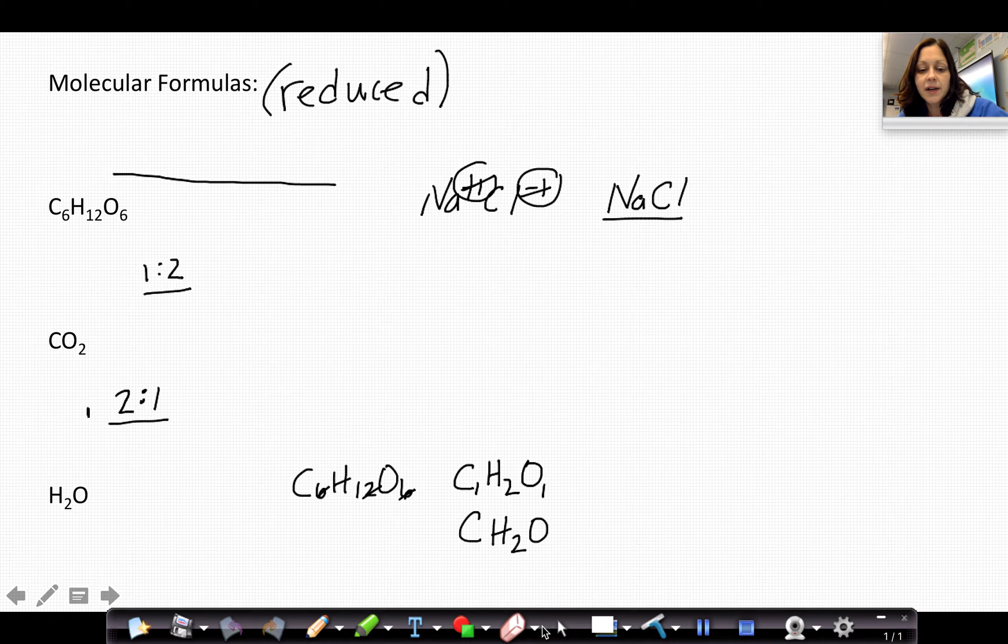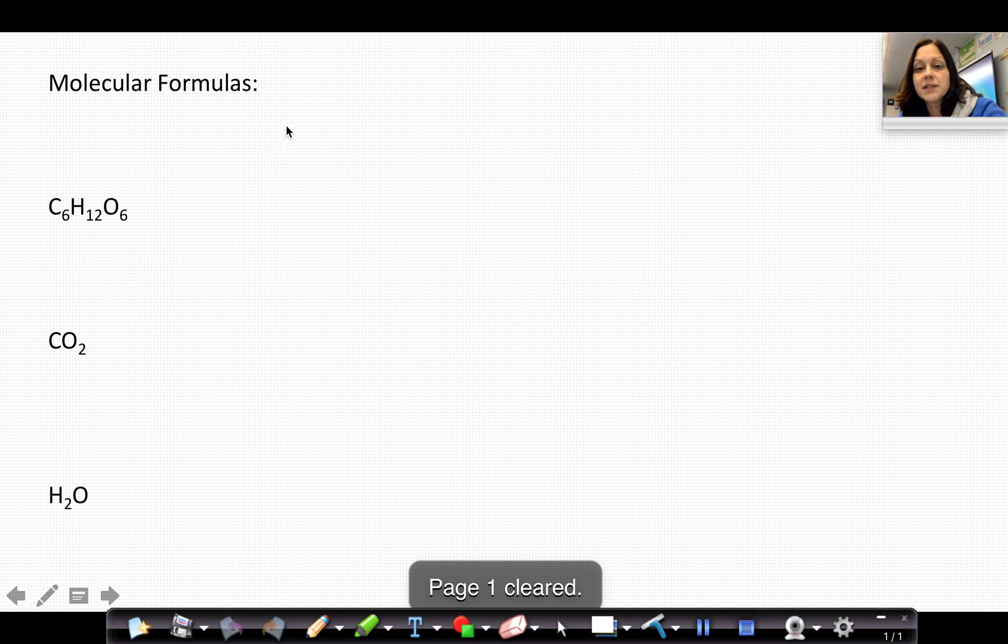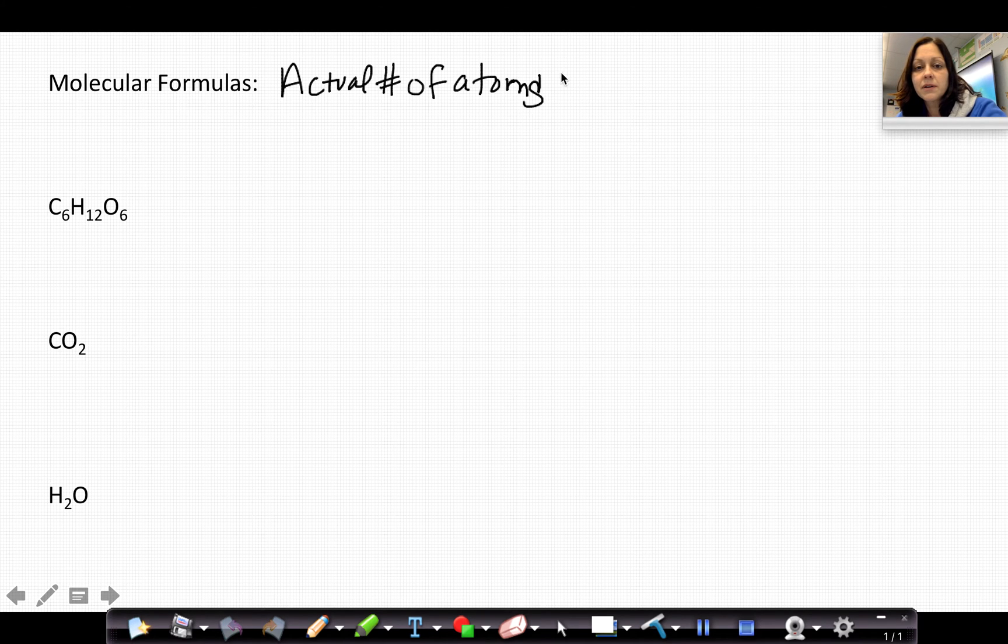When we're talking about molecular formulas, on the other hand, molecular formulas are going to tell us the actual number of atoms of each type in a molecule. So for something like glucose, there's actually six carbons, 12 hydrogen, and six oxygens all connected to each other in a molecule.